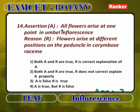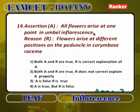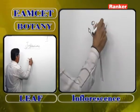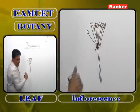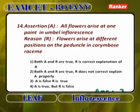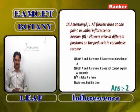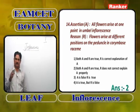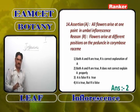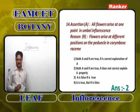All flowers arise at one point in umbel inflorescence — correct, because the peduncle stops its growth, all bracts unite to form an involucre, and all pedicellate flowers develop from a single point. Flowers arise at different positions on the peduncle in corymb inflorescence — also correct. However, both A and R are true but R is not the correct explanation of A, since umbel and corymb are different inflorescences.